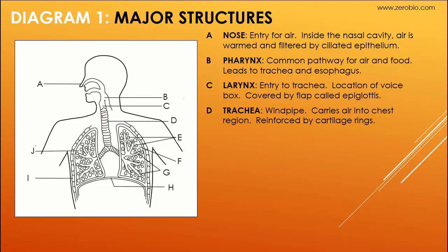D is the trachea itself, also called the windpipe. It has these little circles on it — these are rings of cartilage that reinforce it. Cartilage is a connective tissue that's somewhat flexible but still strong, and it keeps the trachea open at all times.